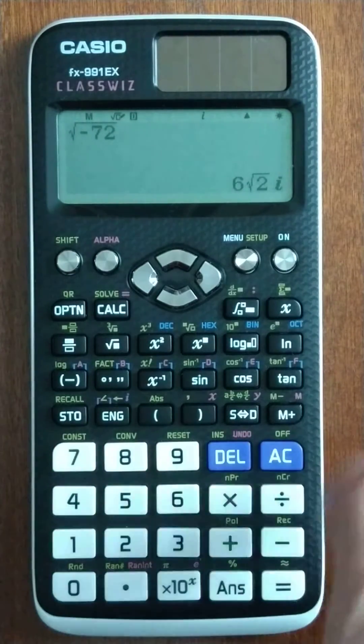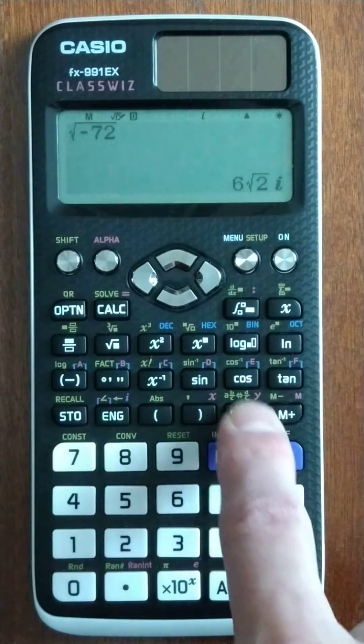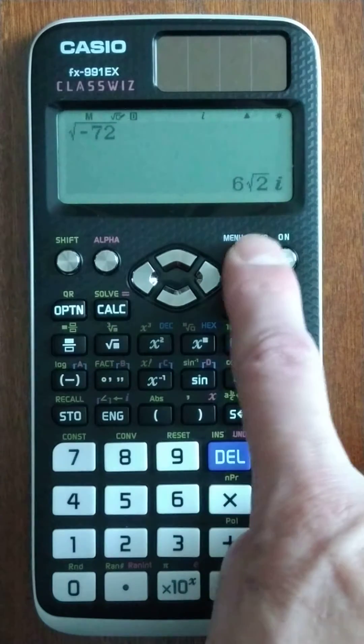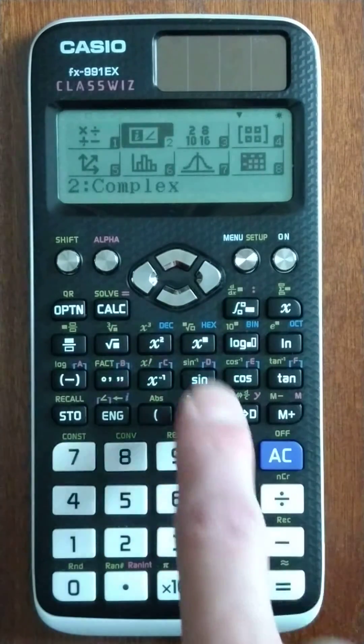An exact answer, 6 root 2 i. If I want to know the decimal equivalent, I can hit this button and bounce back and forth. So yes, inconvenient because I have to go to a different mode, but great answer.